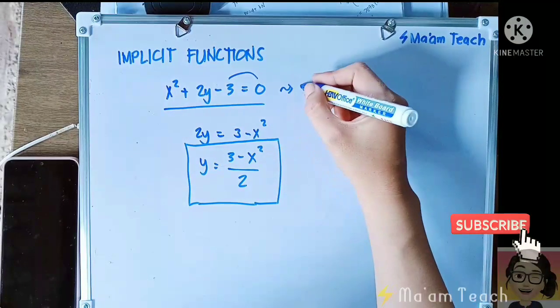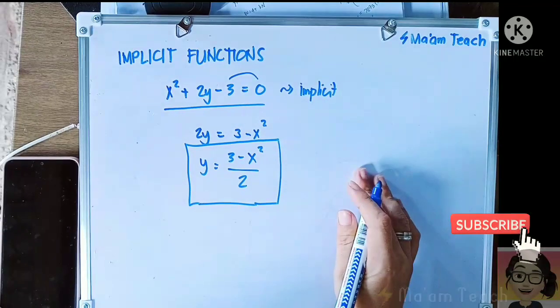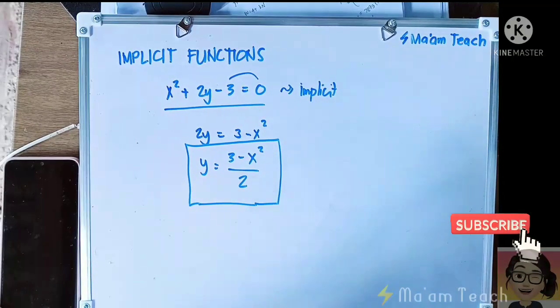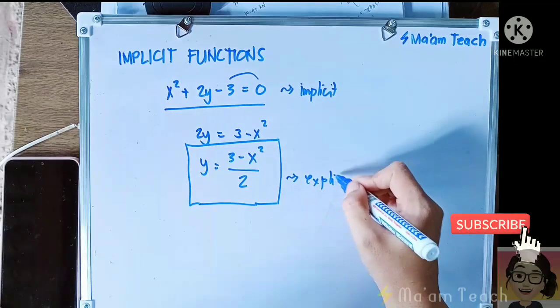Although it is stated, it's defined here, it is defined here, but it's not clearly stated. That is class what we call implicit.